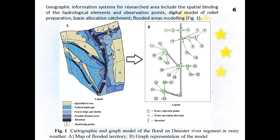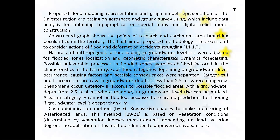Geographic information systems for the research area include spatial binding of hydrological elements and observation points, digital terrain models, basin and catchment delineation, and flooded areas models, as shown in Figure 1. Figure 1 presents a cartographic and graph model of the flooded Dnistra River segment. The left figure is the map of the flooded territory; the right figure is a graph representation. These models are based on aerospace and ground survey data for obtaining topographical maps and digital relief model constructs.